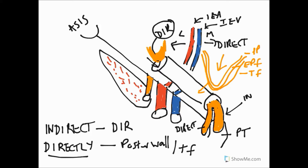A direct hernia does not travel through the entire length of the inguinal canal but penetrates through a weakened part of the posterior wall halfway along its path. Both direct and indirect hernias can protrude through the superficial inguinal ring. With a direct hernia, the peritoneal sac acquires only a layer of external spermatic fascia. Unlike the indirect hernia, which is congenital in origin and acquires all three layers of the spermatic cord, entirely contained within them. That's a brief overview of inguinal hernias.